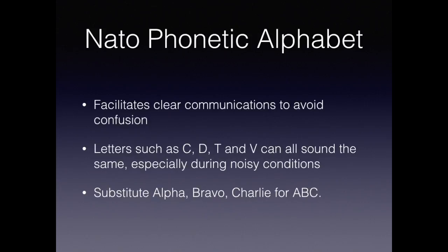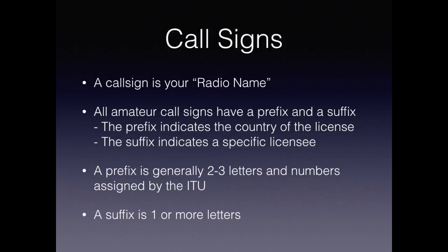The NATO phonetic alphabet is something we use to be more concise with our communications. Take my call sign KE2GS for example. If the radio is a little bit noisy, the E could sound like a C, B, or D and can get kind of confusing. But if I say it phonetically, it's a lot more concise and clear even during noisy conditions. So KE2GS becomes Kilo Echo 2 Gulf Sierra. A call sign is your radio name or radio alias, if you like to think of it that way.